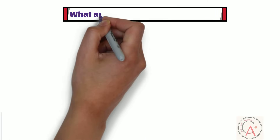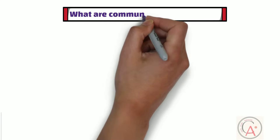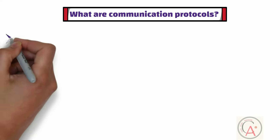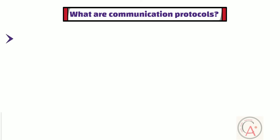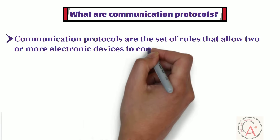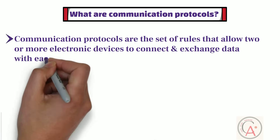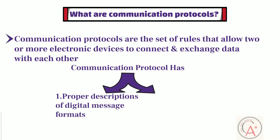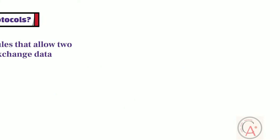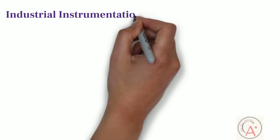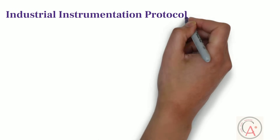First of all, let's start with one basic question: what are communication protocols? Communication protocols are a set of rules that allow two or more electronic devices to connect and exchange data with each other. They have proper descriptions of digital message formats and rules. In the field of process automation, there are seven most commonly used communication protocols.